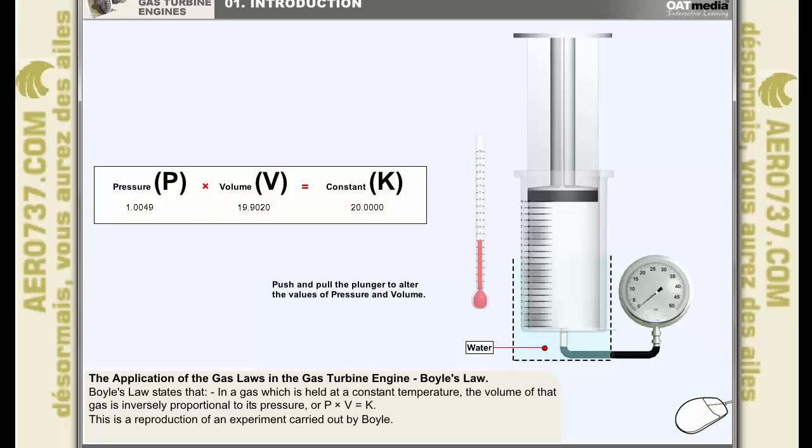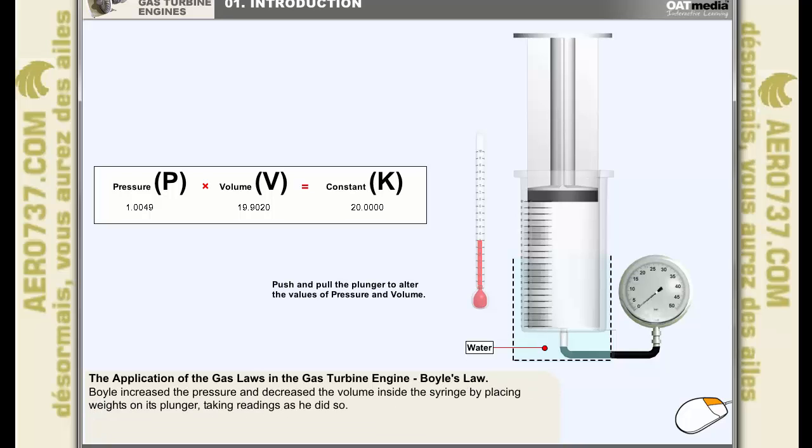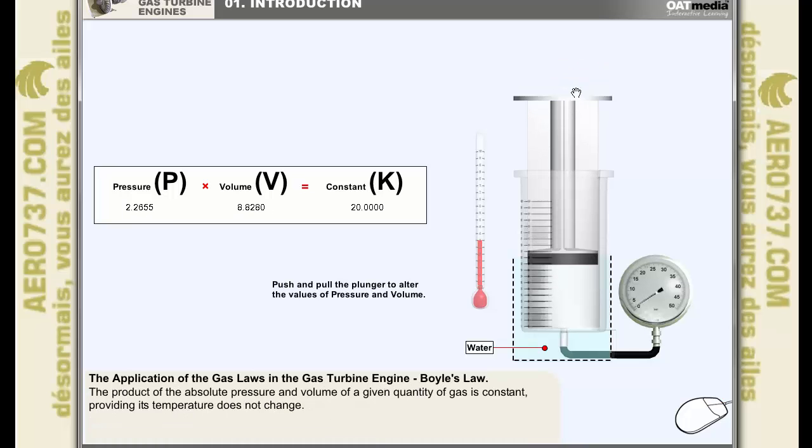This is a reproduction of an experiment carried out by Boyle. He had a calibrated syringe filled with air and reduced its volume. While taking care to retain the temperature of the air inside the syringe constant, he increased the pressure and decreased the volume inside it by placing weights on its plunger, taking readings as he did so. You can see that by multiplying the volume by the pressure, the answer remains a constant. Hence, the product of the absolute pressure and volume of a given quantity of gas is constant, as long as the temperature of the gas does not change. Try moving the plunger up and down yourself to simulate changing the weight on it, and note that the results of P times V always remain a constant.